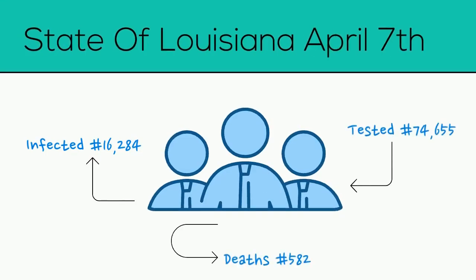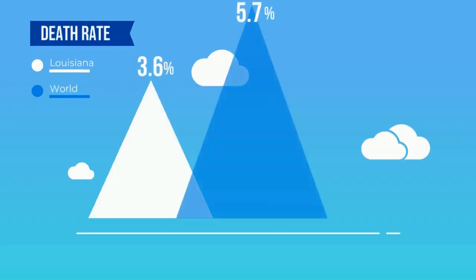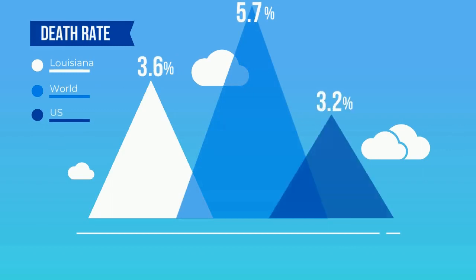Here are some numbers about the COVID-19 virus in the state of Louisiana, summarized at April 7. The total infected number is 16,284. The total tested cases is 74,655 and the total deaths is 582. The reason I'm focused on the state of Louisiana is that the Louisiana death rate is actually higher than the US average — Louisiana is 3.6%, the world is 5.7%, and the US is 3.2%.